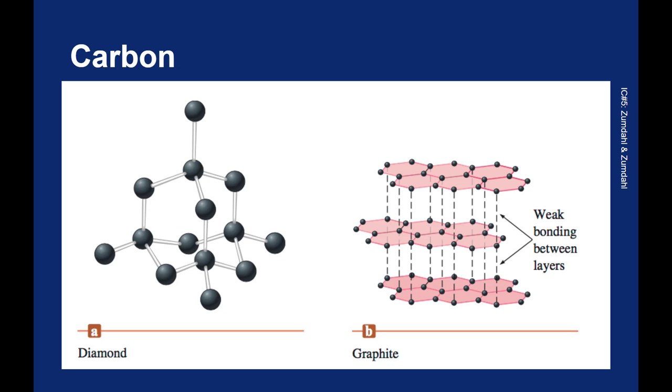As I said before, diamond is sp3 hybridized carbon, and the carbons all bond to each other in very strong sigma bonds.